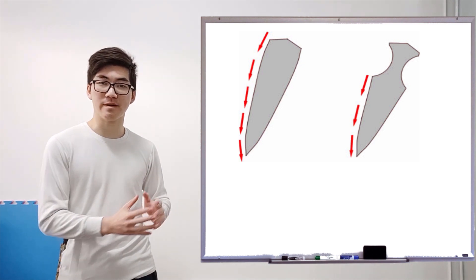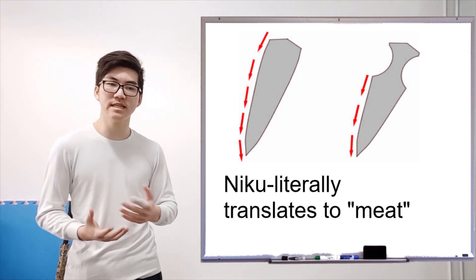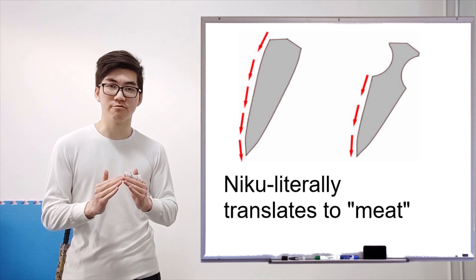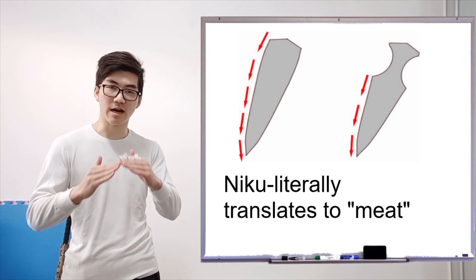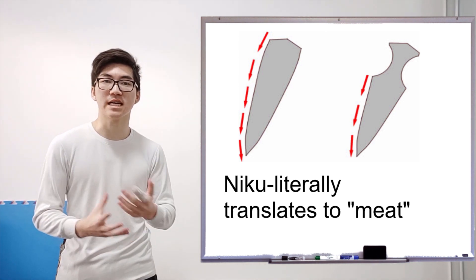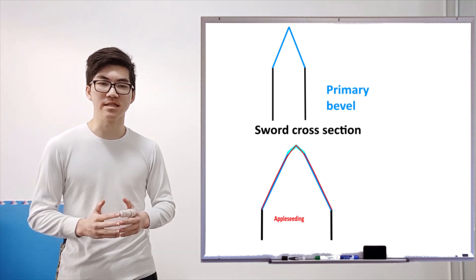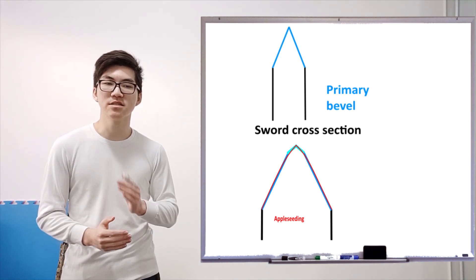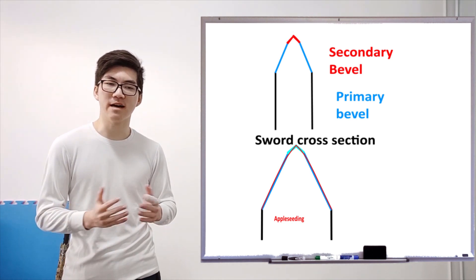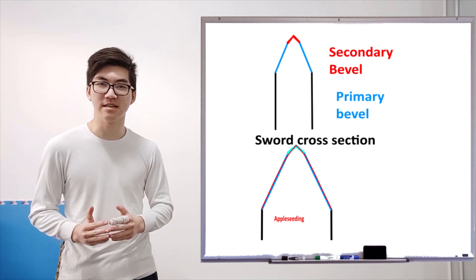Now, apple seeding and secondary beveling were done on Japanese katanas. Apple seeding was done and they called it Niku or meat. And what it did was it thickened that primary bevel and gave it a little bit more material by creating that apple seed shape so it could shock absorb and it was less likely to break on contact with other swords. Now Niku is improved shock resistance compared to a primary bevel, but it's not actually better compared to a secondary bevel because you're not changing the amount of material. A secondary bevel actually has more material and more thickness than the apple seeded Niku.